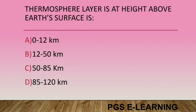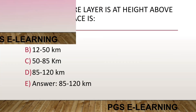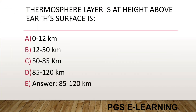The thermosphere layer is at a height above Earth's surface of: Option A, 0 to 12 km. Option B, 12 to 50 km. Option C, 50 to 85 km. Option D, 85 to 120 km. Correct answer is 85 to 120 km.